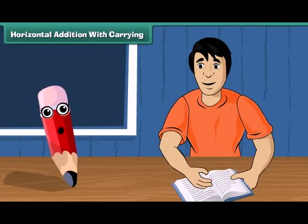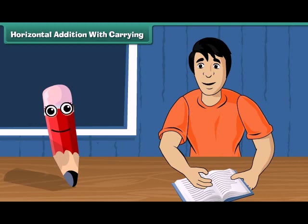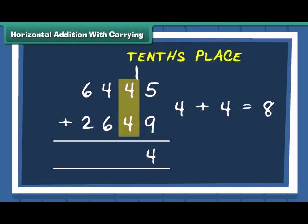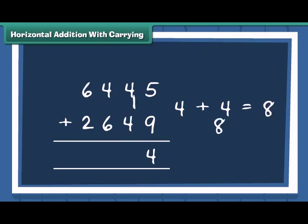Let us practice one more example with a bit of a twist. We have 2 numbers, 6445 and 2649. Add the numbers at one's place. Now carry 1 to the ten's place. Add the ten's.